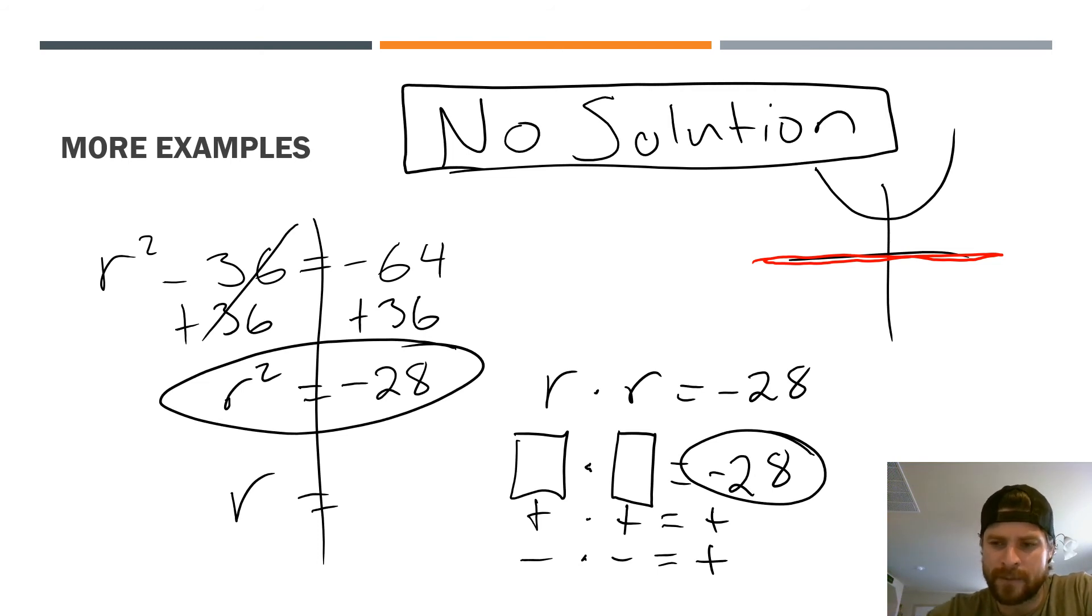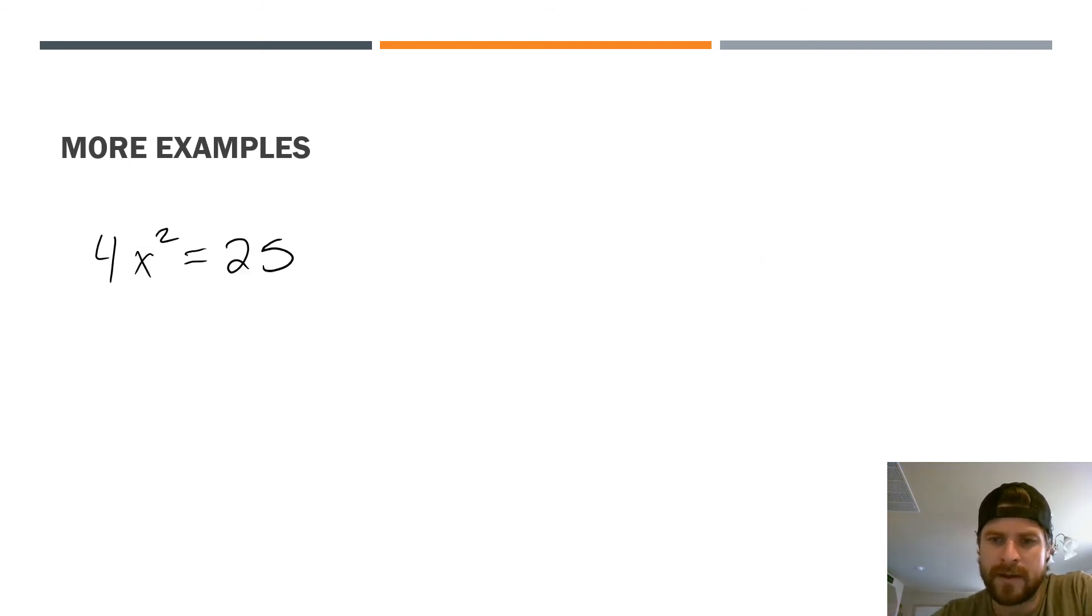Whenever you have a variable that's squared all by itself isolated on one side and it says it's supposed to equal a negative result, it can't be done. It's no solution. All right. So there's examples like that. You'll see that in your book. 4x² = 25. This is the last and final step I'm going to go over here.